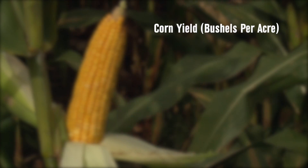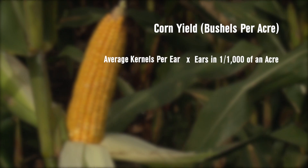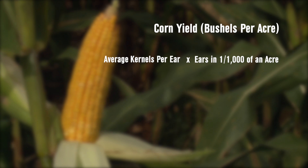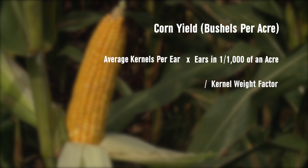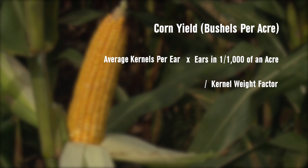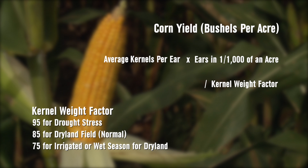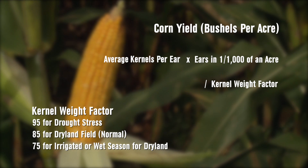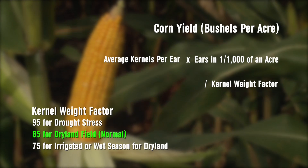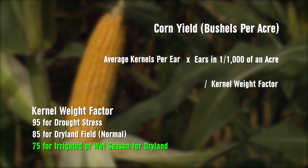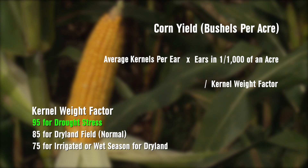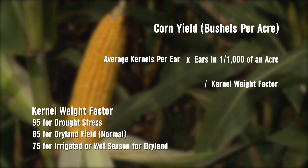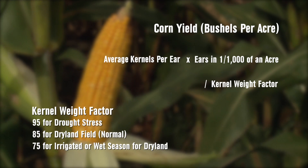You average those five ears on one side and the average on the other five. Then you take kernels per ear — the average — times the number of ears you have in that 17 feet 5 inches. You multiply that number and then divide by a kernel weight factor. With good conditions, I'm going to use 75,000 — a number of 75 — to divide by. Under normal years, maybe 85 for dry land, 75 for irrigated as a conversion factor. But in a drought year like 2012, you're going to use 95. Part of this estimate we don't know yet is what the kernel weights are going to be.